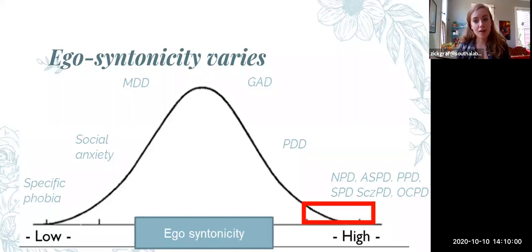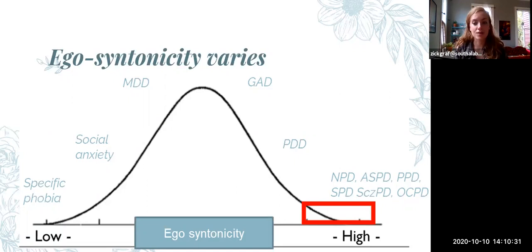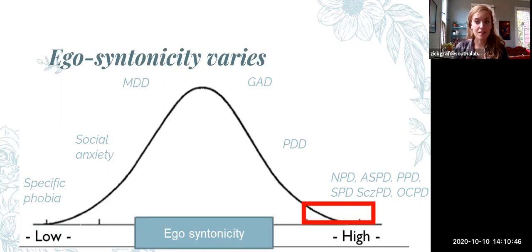Getting closer to the egosyntonic end would be persistent depressive disorder — a chronic, mild form of depression lasting two years or longer. One of the criteria for a personality disorder is that it's pervasive, and persistent depressive disorder is a fairly pervasive form of depression that can make it difficult for a person to distinguish their behavior and feelings with symptoms from without. But personality disorders are still the most egosyntonic because they are very pervasive, very long-lasting, and influence everything about how a person sees themselves in the world — behaviors that haven't changed since adolescence and that they identify as part of their personality feel egosyntonic to most people with personality disorders.